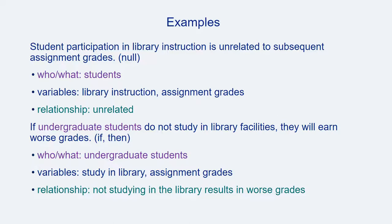Let's look at these major components in a few examples. In the first hypothesis, 'Student participation in library instruction is unrelated to subsequent assignment grades': the students are the who, the variables are library instruction and assignment grades, and we predict that they are unrelated because this is the null hypothesis. In the second example, we see an if-then structure: 'If graduates do not study in the library, they will earn worse grades.' Here the who is undergraduate students, the variables are studying in the library and assignment grades, and the relationship is that lack of study in the library results in worse grades — which is the null version of saying study in the library results in better grades.